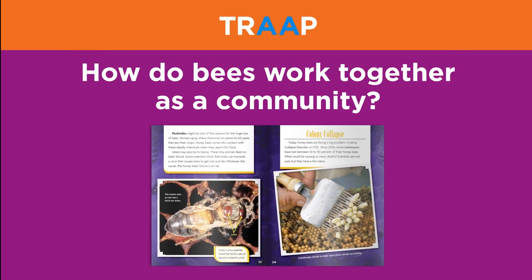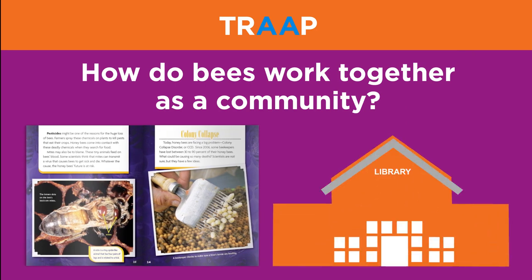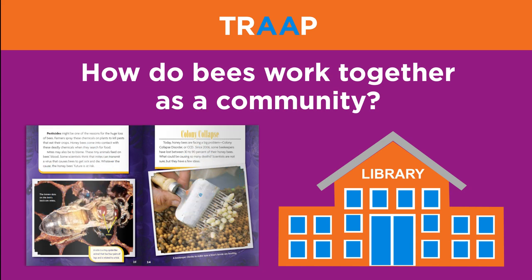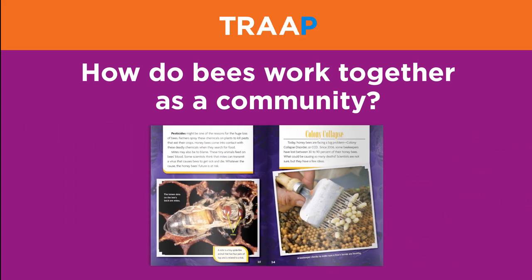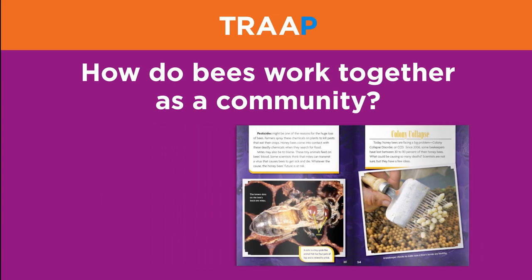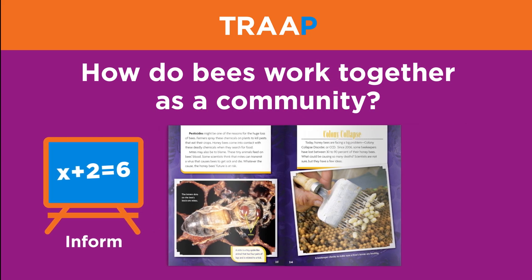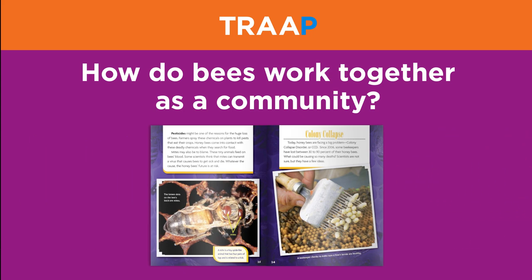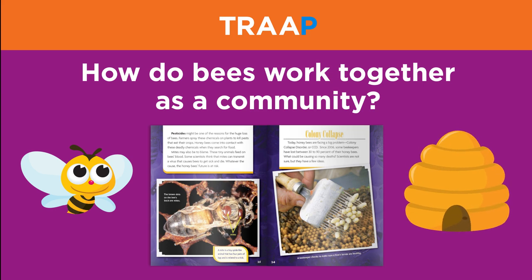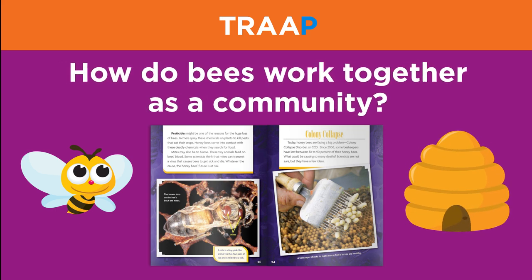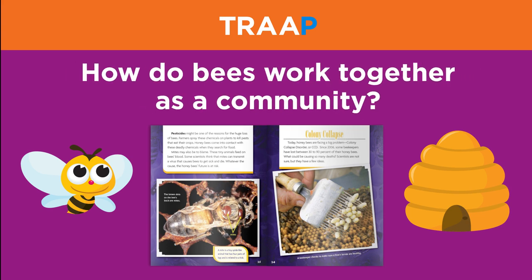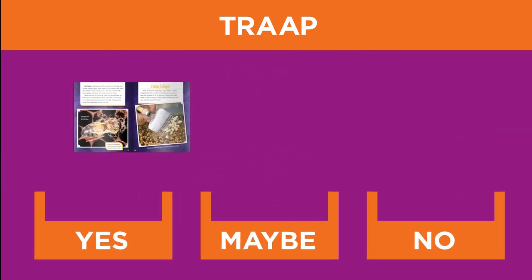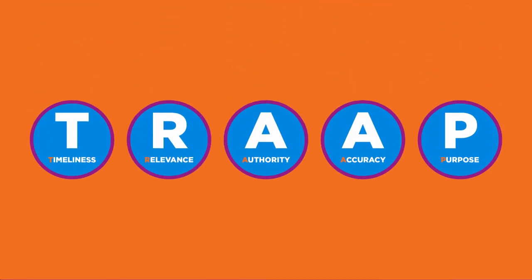The next two tests are Authority and Accuracy. Because we found this book in a library, we know that a librarian checked for both — thanks for checking, librarian! Now for the final test: Purpose. After browsing through the book, you can determine that the author's purpose is to inform. The author is not trying to persuade, entertain, or sell — instead, the author wrote this book to teach the reader about honeybees and their hives. Because you want to know more about how honeybees work in a community, the purpose works for you. This book goes into the yes pile.